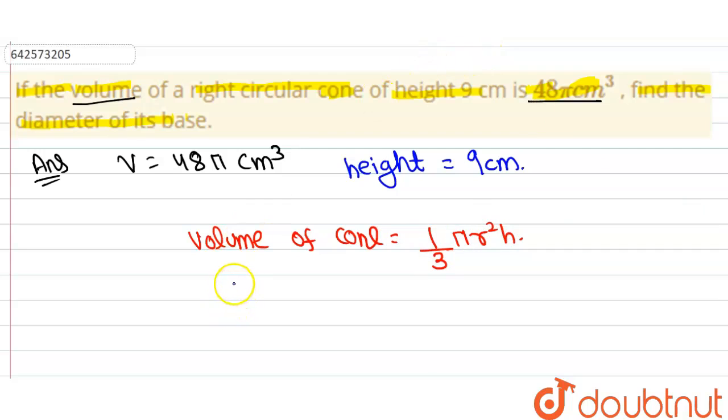Now the volume is given as 48π, that is equals to 1/3 into π into r² into h where h is 9. Now here this 3 divides this 9 in 3 times and this π and this π get cancelled out.